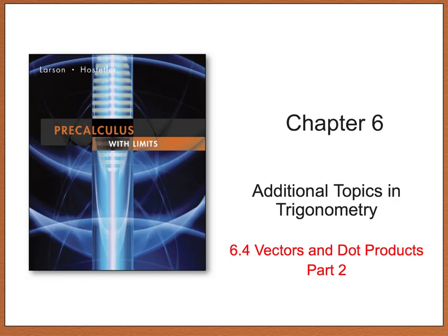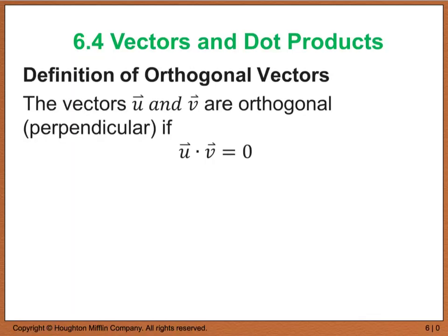Hello, and welcome to the second part of section 6.4. We're going to continue looking at vectors and dot products today. So far, we've looked at dot products, we've looked at what a vector is, and we've looked at finding angles between two vectors. We're going to start out today by looking at the definition of orthogonal vectors.